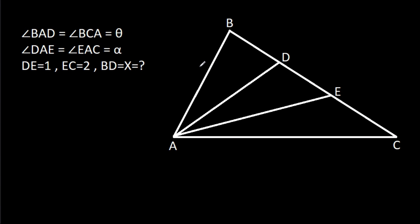In this video, we have been given that angle BAD is theta, angle BCA is theta, angle DAE is alpha, angle ESC is alpha, DE is 1, EC is 2, and BD is X. Then we have to find X.